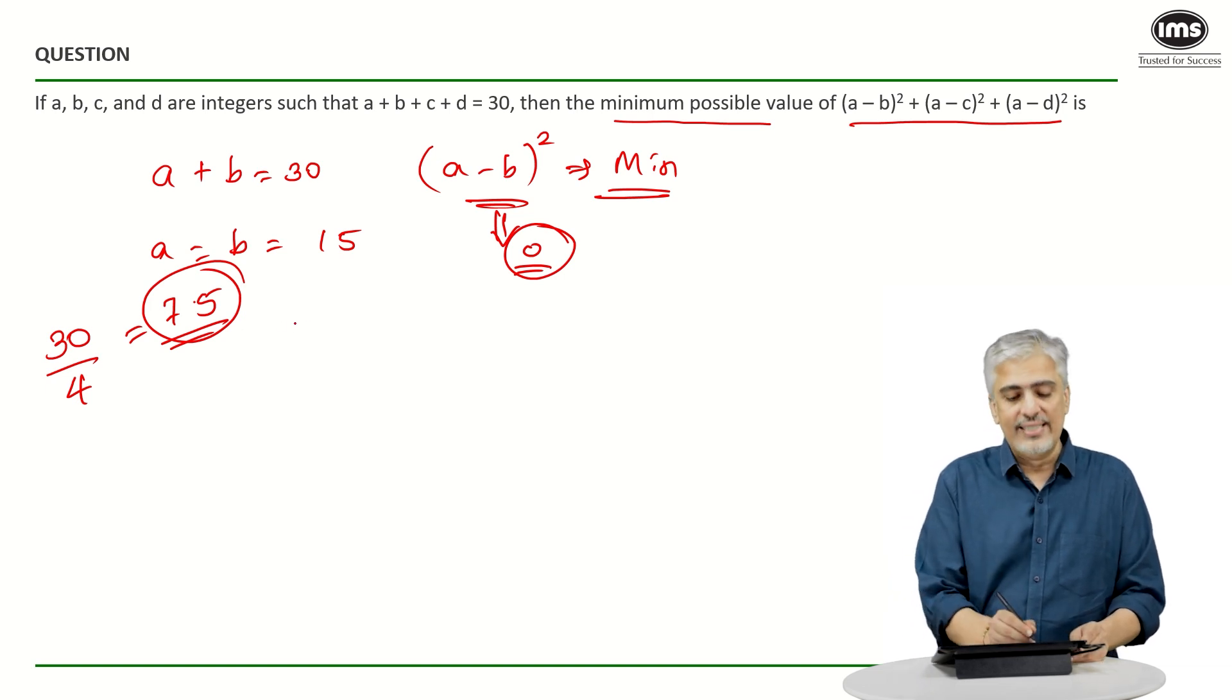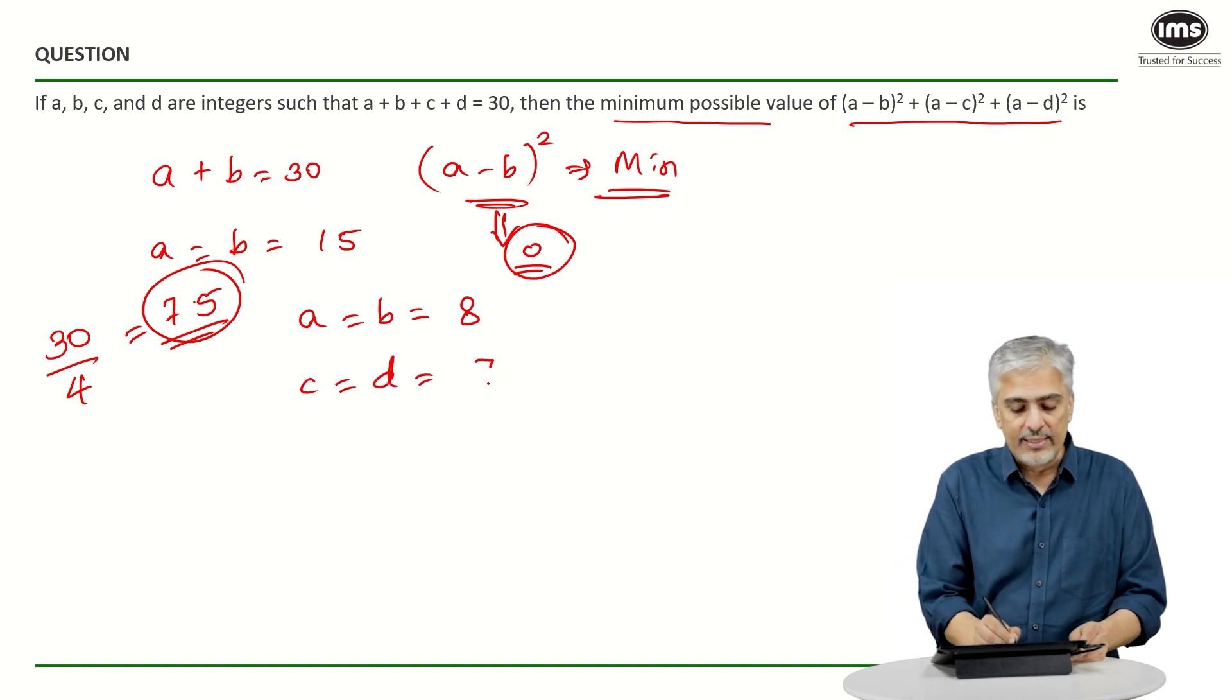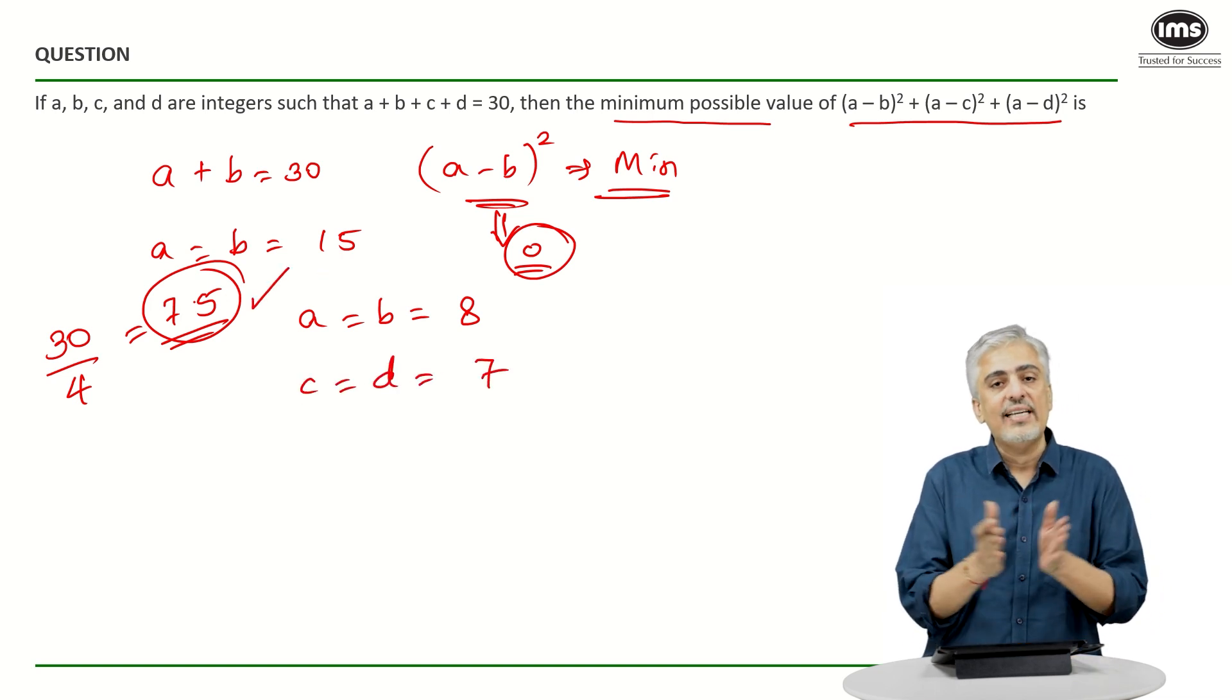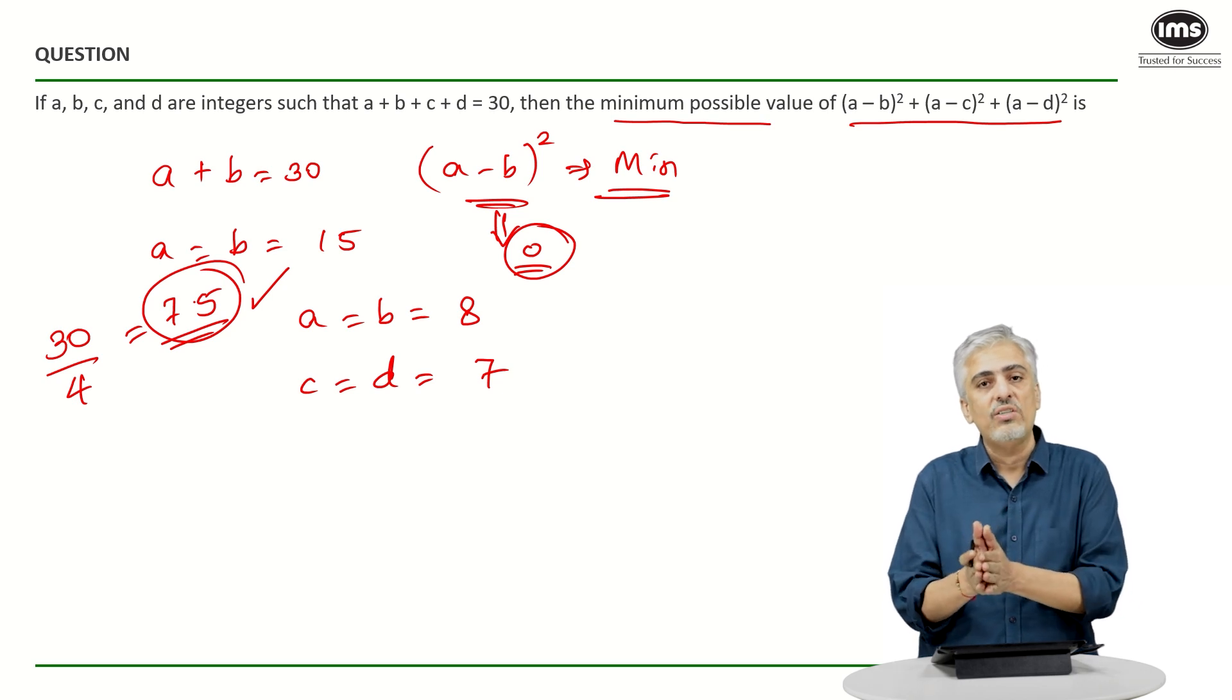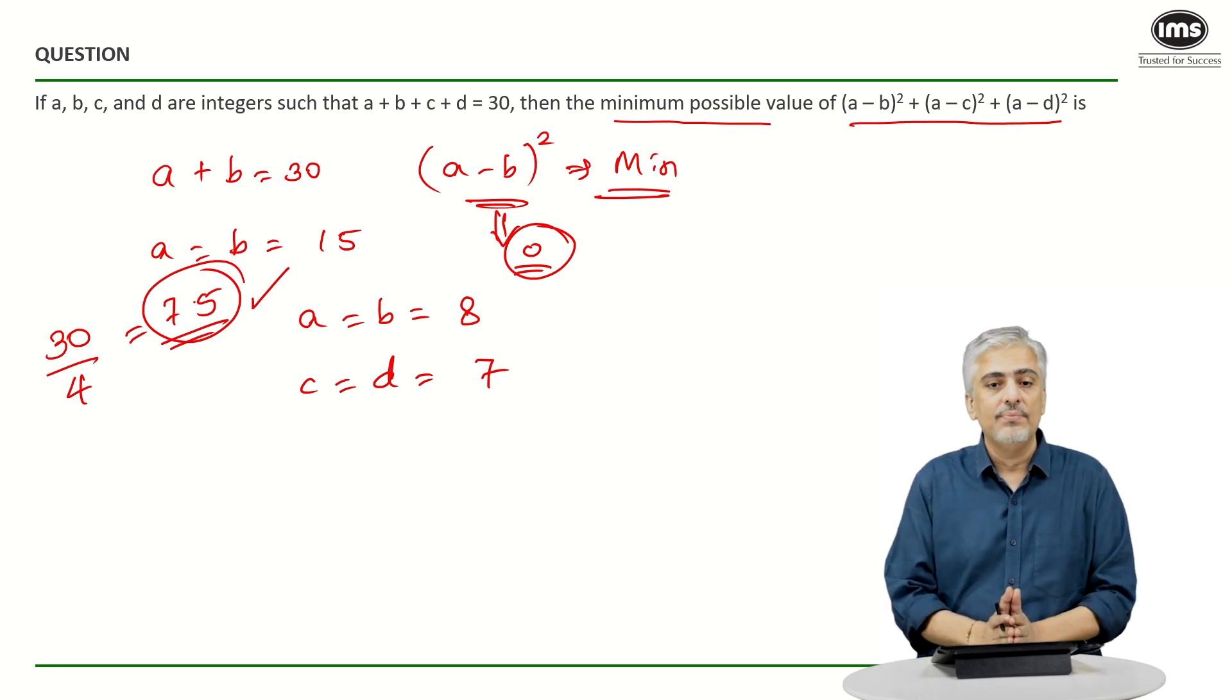So, you can take A and B as eight. That is eight, two are sixteen. Fourteen is left and C and D you can take as seven. That is on each side of 7.5. One integer will be seven and the other will be eight. Right?